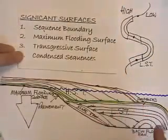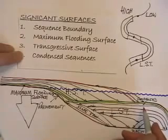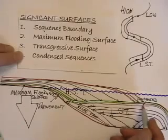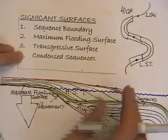Another important sequence is the condensed sequence here, which can be traced and often contains fauna.